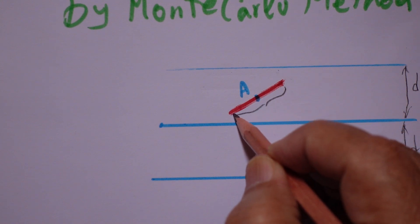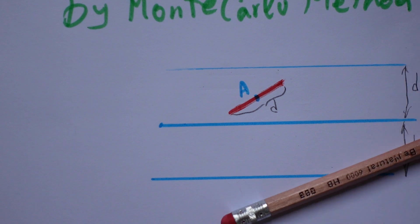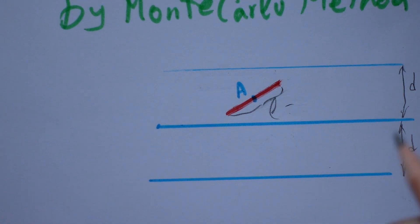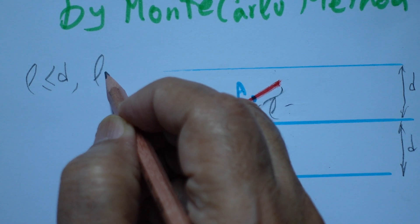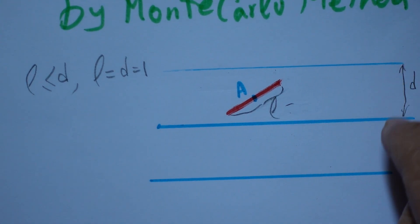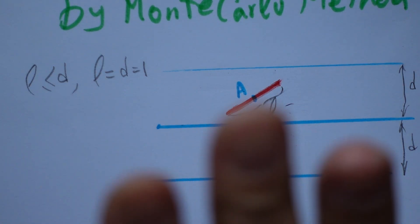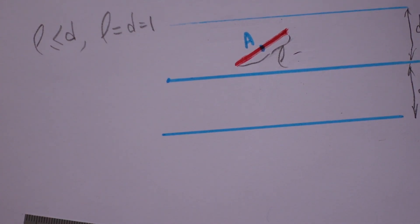The distance between the parallel lines is d, and the length of the needle is l. For simplicity, let's say l is less than or equal to d. This is the length of the needle, and these are the parallel lines on the floor or desk — Buffon's Needle Problem.